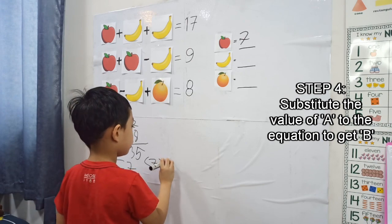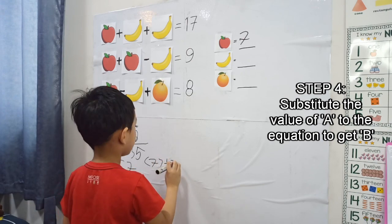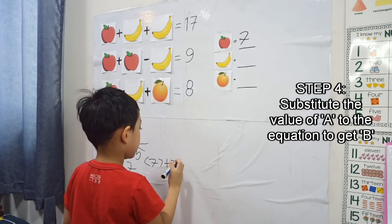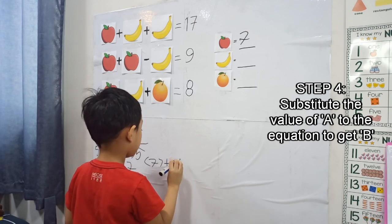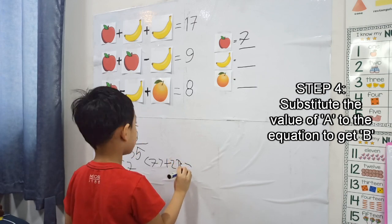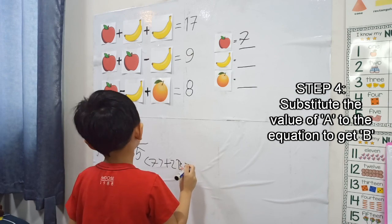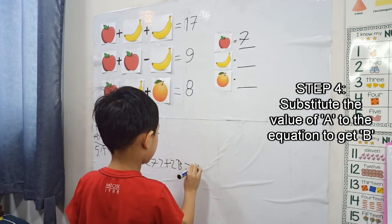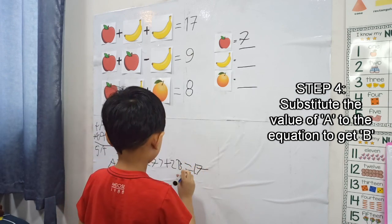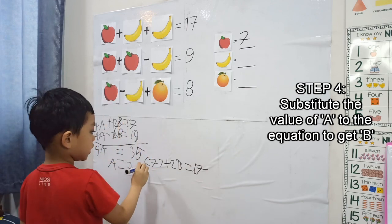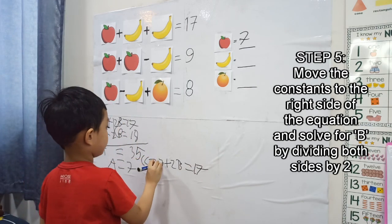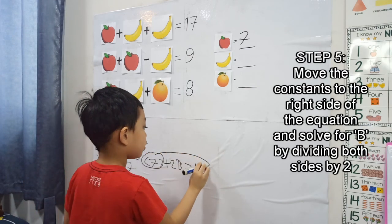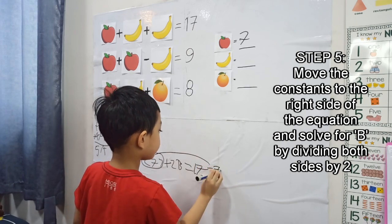7 plus 2B equals 17. And this becomes 2B minus 7.